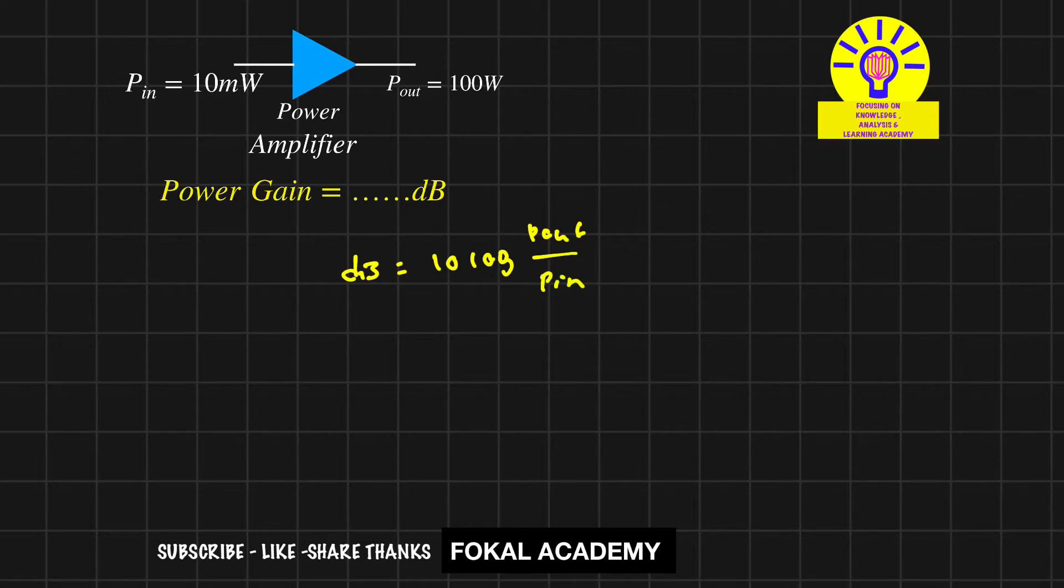Now substitute: 10 times log of 100W divided by 10mW. This equals 10 times log of 10 to the power 4, which equals 40 dB.